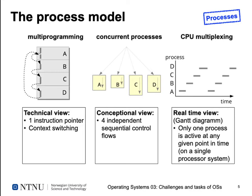Our processor doesn't actually know about processes — it just executes instructions one after the other, jumping between them. It has one single instruction pointer, and context switching — changing the value of the instruction pointer to switch from A to B, B to C, and so on — must be done by the operating system. This multi-programming view creates the illusion of several programs executing at the same time, even though the CPU can only execute one instruction at a time.